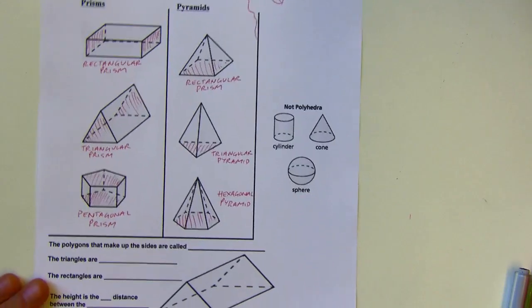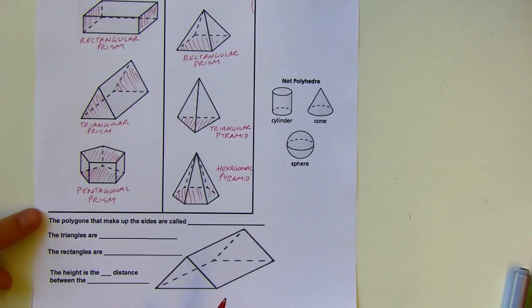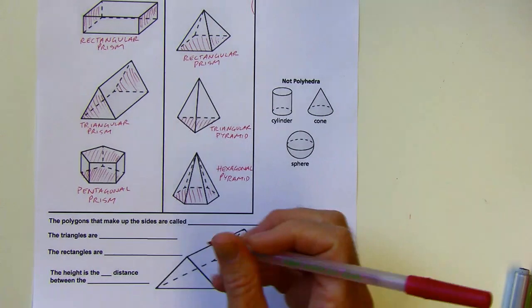And then some vocab down at the bottom. So this is a triangular pyramid here. The polygons that make up the sides, all of this, so the triangles and the rectangles that make up all the sides, these are called faces.